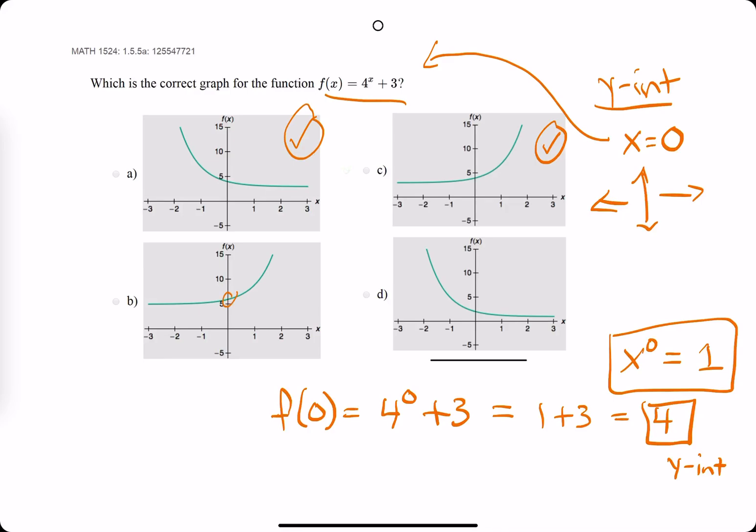What about b? The y-intercept looks like it's about 6, so I'm not trusting that. D is below 5, but it looks a little bit lower than 4, so I'm going to cross that one off too. So we're left with a or c.